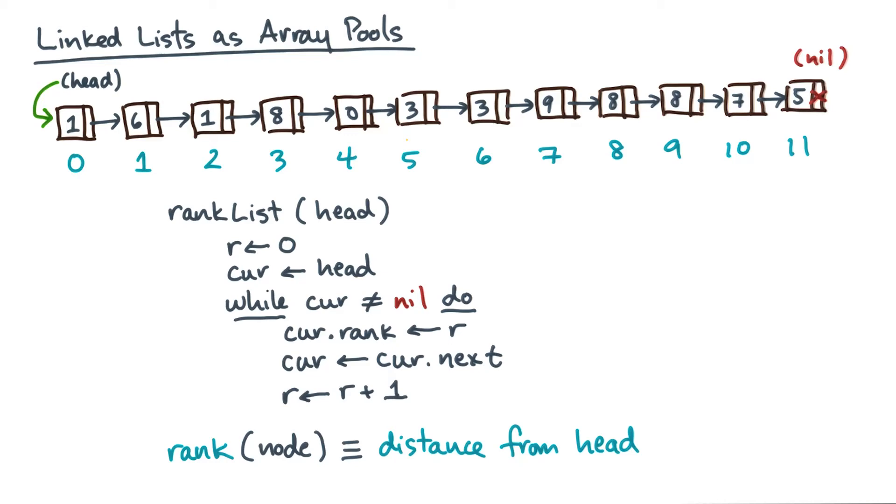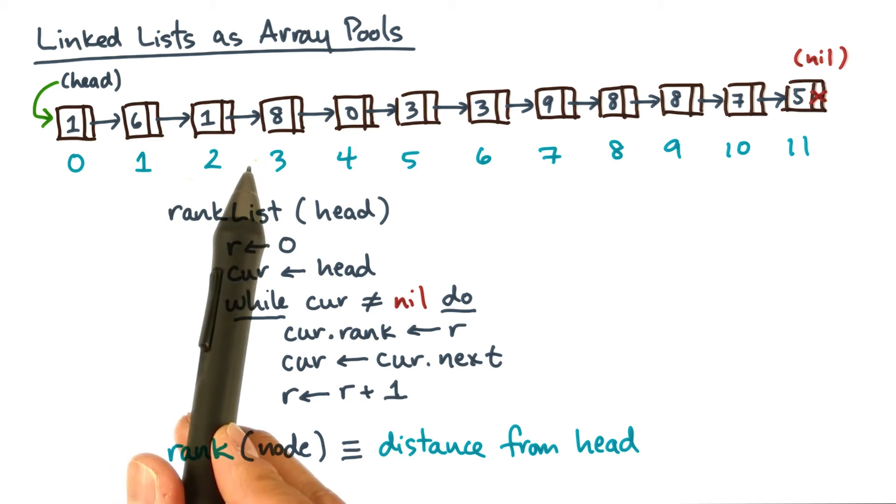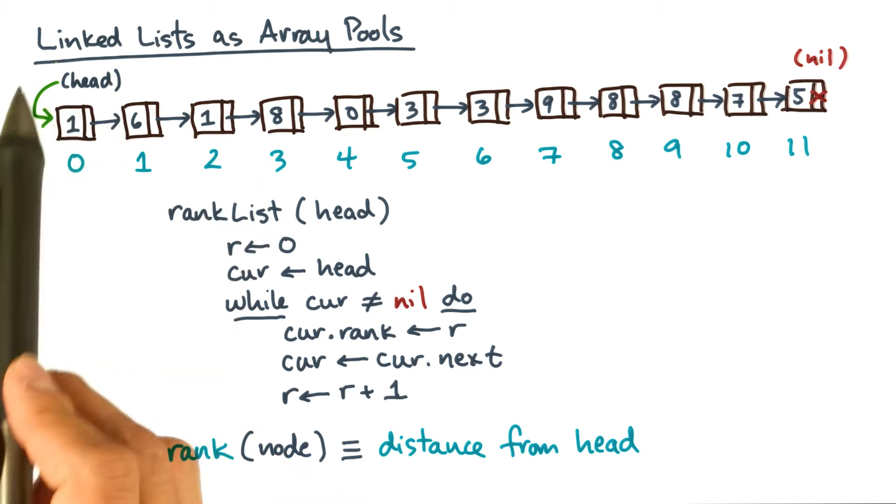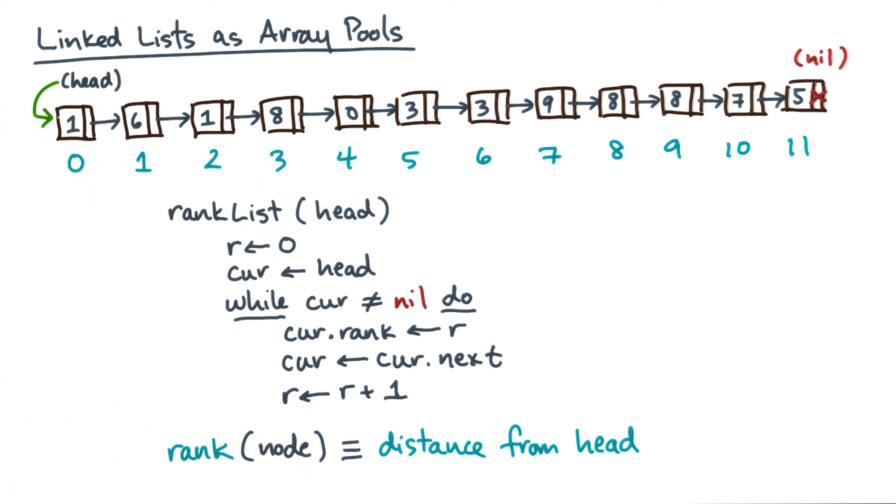In principle, a list ranking is a scan. The essential problem is this data structure. It just has a single entry point, which is the head. And the interface, as we've defined it, leaves no option to get other elements of the list without traversing them one by one.